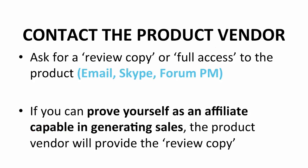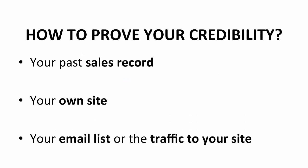Contact the product vendor. Ask for a review copy, or full access to the product. You can find the way to contact the product vendor in the product page — click 'Join the Affiliates,' and there you go. The contact given is usually through email, Skype, or forum private message. If you can prove yourself as an affiliate capable in generating sales, often times the product vendor will provide you a review copy. How do you prove your credibility to the vendor? There are three common things that your vendor would look at: past sales record, your own site, and the size of email list or the traffic you send to your site.